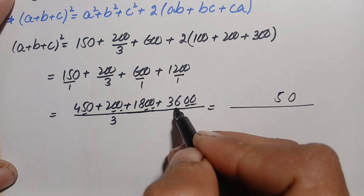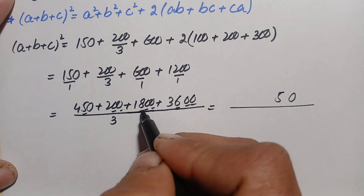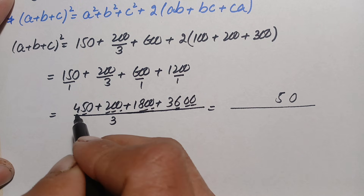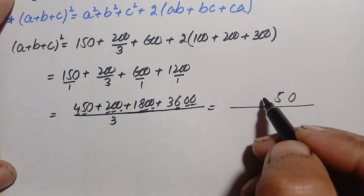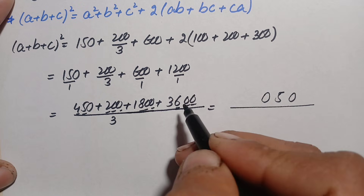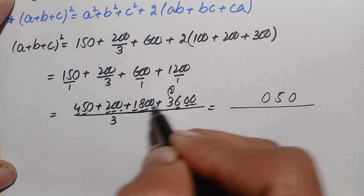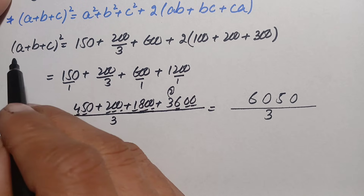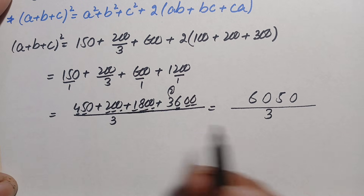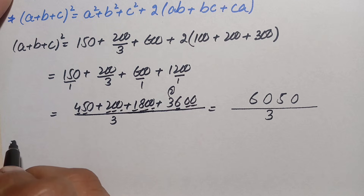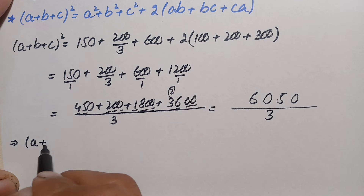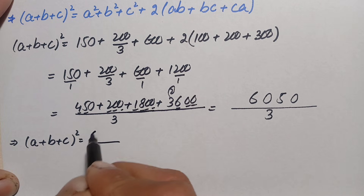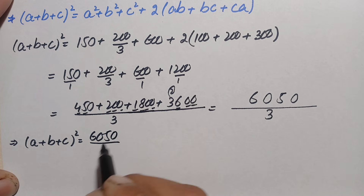Adding all the numerators: 450 plus 200 plus 1800 plus 3600 gives 6050. So (a + b + c)² equals 6050 divided by 3.